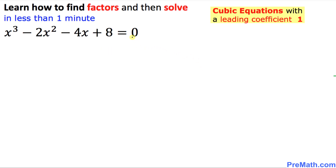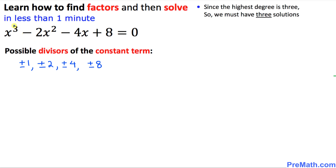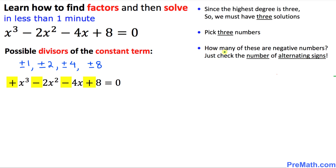Here is our next example, and we are going to find the factors for this cubic equation. The very first step is to find the possible divisors of the constant term. Those are the integers: positive/negative 1, positive/negative 2, positive/negative 4, and positive/negative 8. Since the highest degree is 3, we are going to have 3 solutions, so we will pick 3 numbers among these possible divisors.